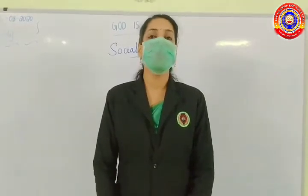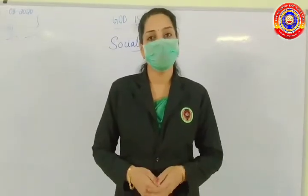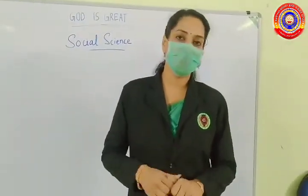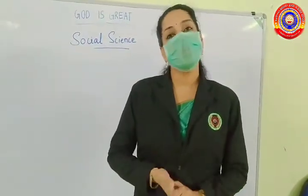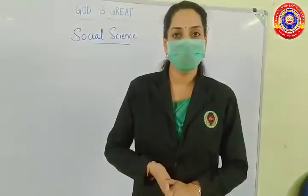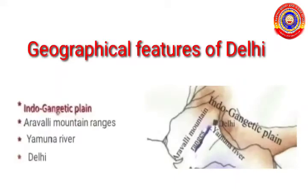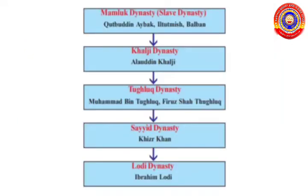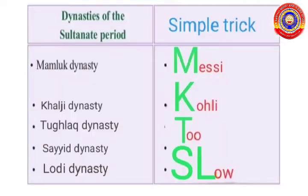Hi students, hope all of you are fine. Have you written all the question answers in your notebook? In the previous videos we discussed about the geographical features of Delhi, the Rajputs, and about the dynasties of Sultanate period. Do you remember the trick I told you — Messi Kohli Too Slow?